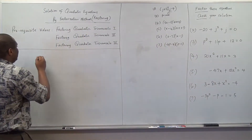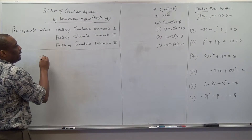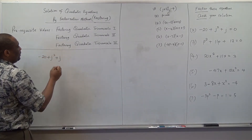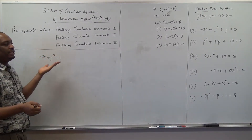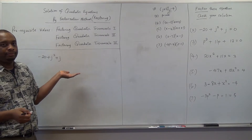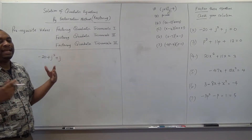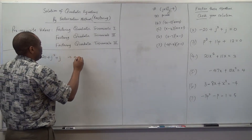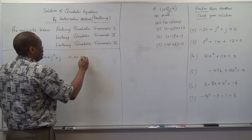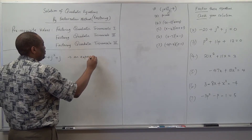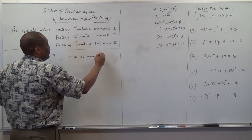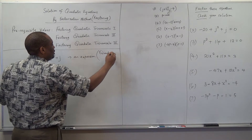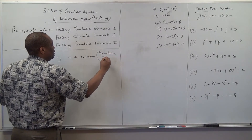If you have it like this — negative 20 plus j squared plus j — this is just the quadratic trinomial. It's an expression, and this is the quadratic trinomial, which is also a polynomial function.